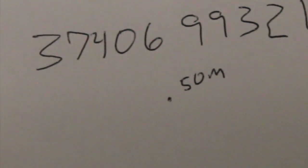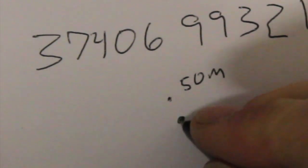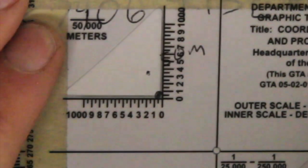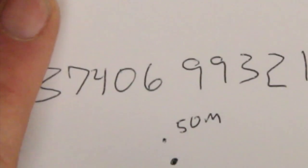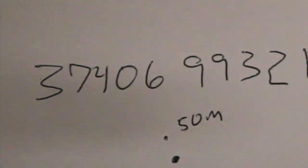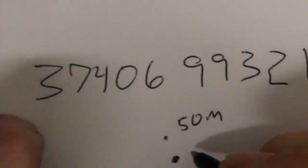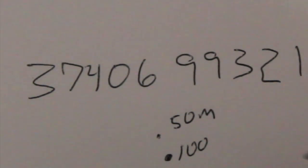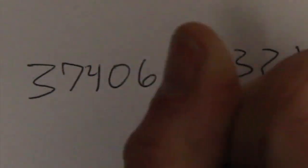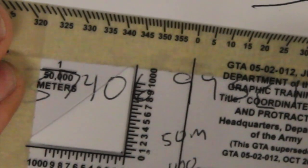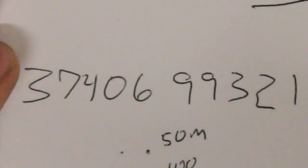If you use a larger pen, that point could represent 100 meters on the map — more than a football field. That's why you want the finest point possible. Even with the finest pen tip, measuring against the protractor scale, you're still looking at about 25 meters of inherent imprecision. This is why using the sharpest pencil you have matters.